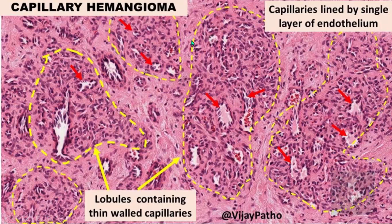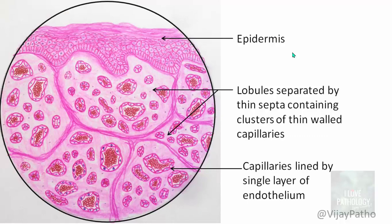Usually you don't find inflammation in hemangiomas. This is a microscopic picture of capillary hemangioma where you can make out that it is made up of lobules — this is one lobule, this is another lobule. Lobules of small-sized blood vessels are capillaries, and each of these capillaries is lined by a single layer of endothelium. The intervening stroma is less cellular; hardly any inflammatory cells. This illustration shows a capillary hemangioma of the skin: that's the epidermis, and in the dermis you find these lobules comprising capillaries lined by a single layer of endothelium.